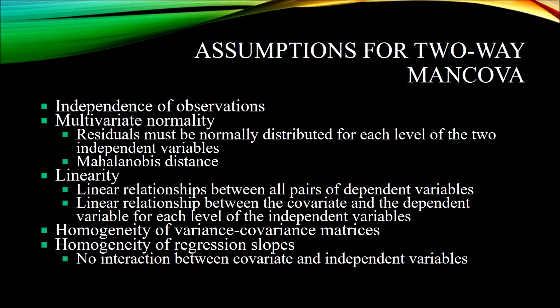Since the assumption is for multivariate normality rather than just univariate normality, we also want to examine the Mahalanobis distance, which indicates whether we have multivariate outliers. One or more multivariate outliers could indicate a violation of the multivariate normality assumption. The next assumption is linearity — you need linear relationships between all pairs of dependent variables, and also a linear relationship between the covariate and each dependent variable for each level of the independent variables.